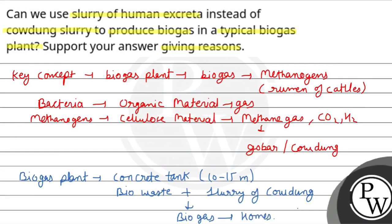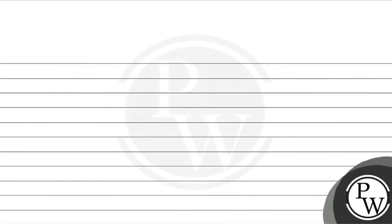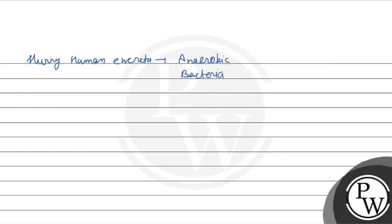If we use the slurry of human excreta in a biogas plant, then what will happen? We can produce biogas. Human excreta contains organic material. If we introduce anaerobic bacteria, then we will get biogas. This biogas will be more nutritious, because organic material is more abundant in human excreta.